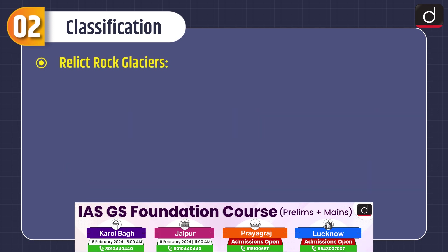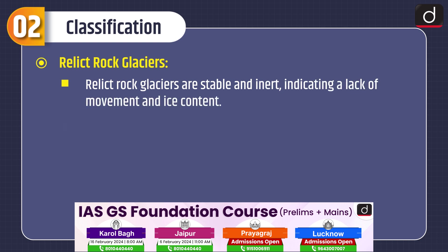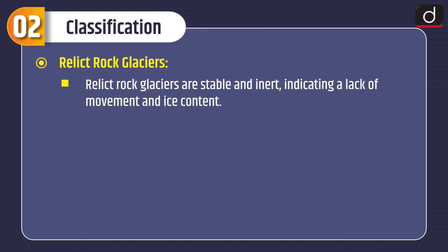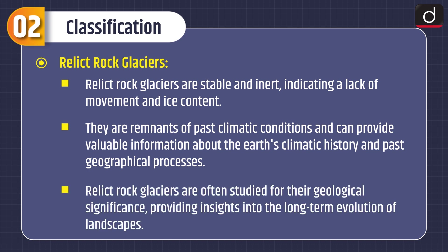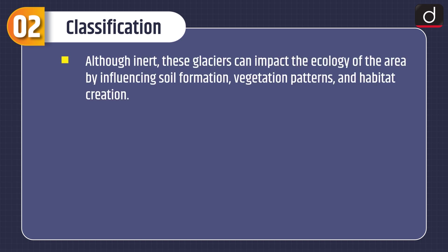Relict rock glaciers are stable and inert, indicating a lack of movement and ice content. They are remnants of past climatic conditions and can provide valuable information about the Earth's climate and past geographical processes. Relict rock glaciers are often studied for their geological significance, providing insights into the long-term evolution of landscapes. Although inert, these glaciers can impact the ecology of the area by influencing soil formation, vegetation patterns, and habitat creation.